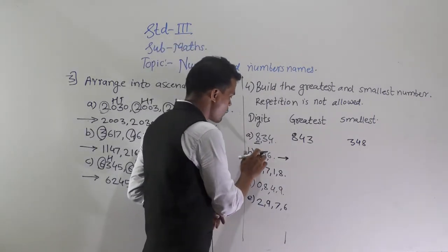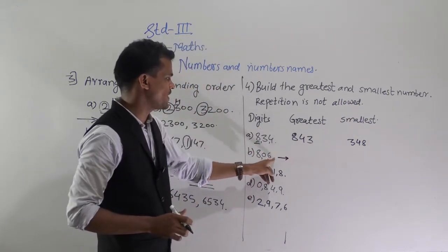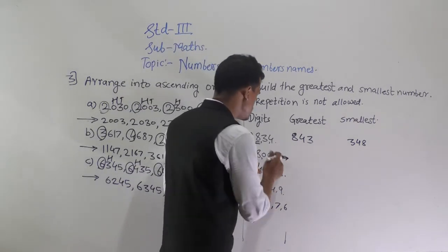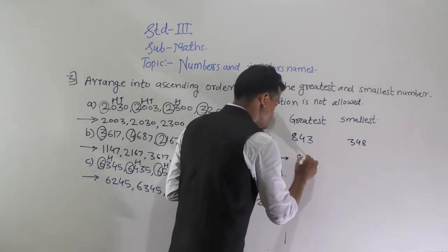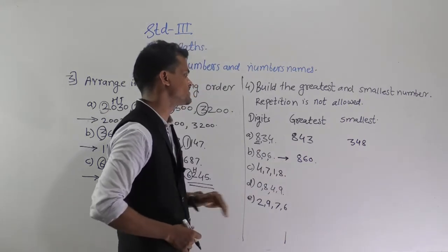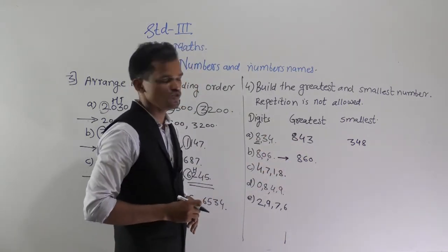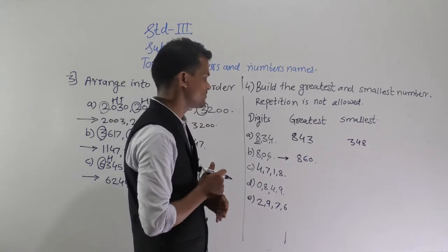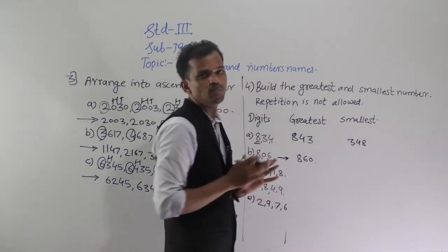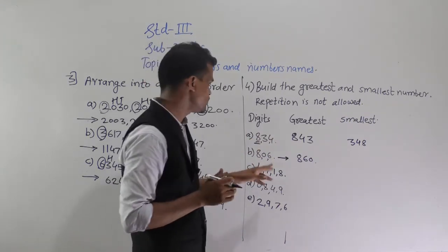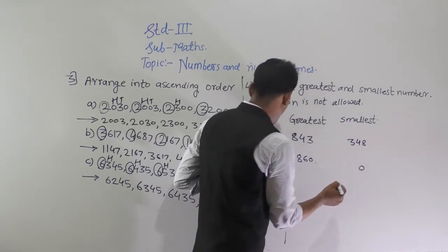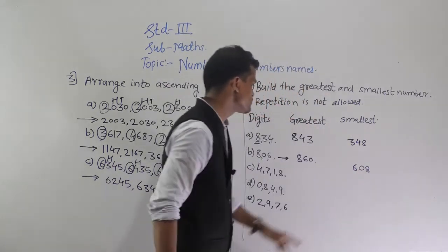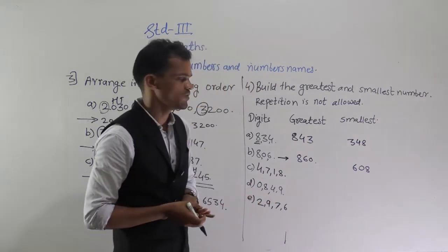Next, using digits 8, 0, and 6: to form the greatest number, arrange in descending order — 8, 6, and 0 — giving 860. For the smallest number, arrange in ascending order, but since one digit is 0, we cannot put 0 at the first position. Write 0 at the second position and arrange the remaining digits in ascending order: 6 and 8. So 608 is the smallest number formed.